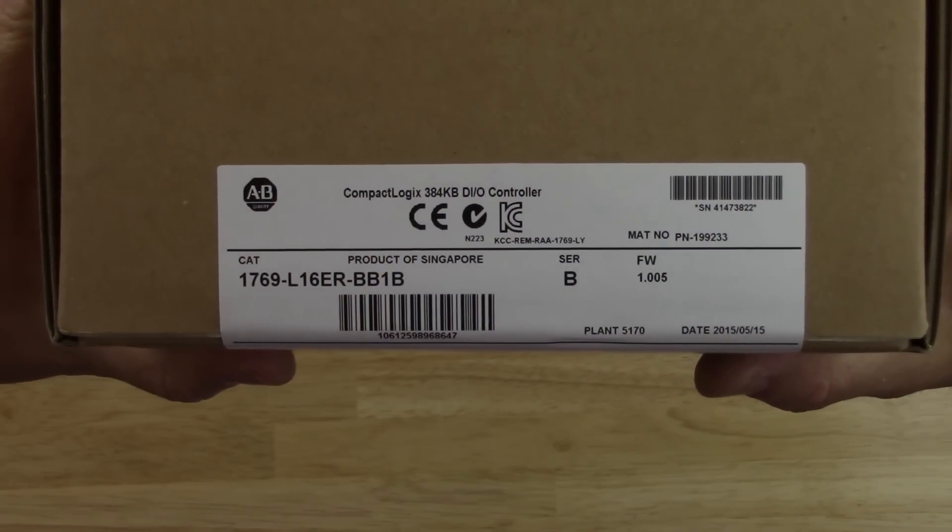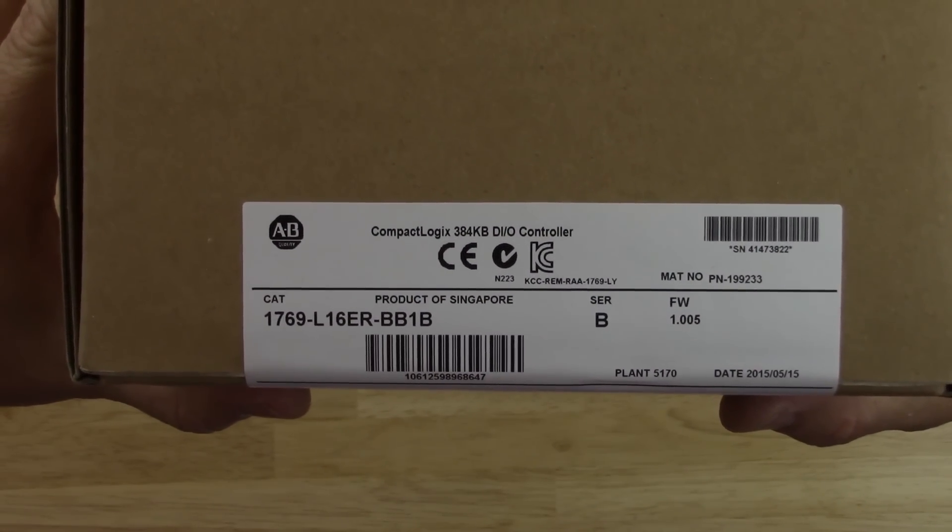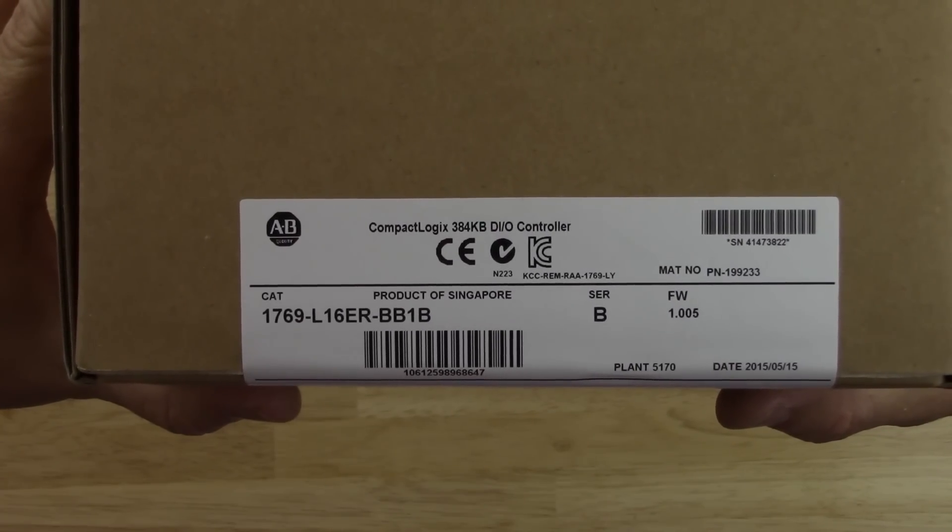Okay, here we have a brand new CompactLogix L1. Let's go ahead and take a look at the label. We'll zoom in on it. And here you can see I have a 1769 L16ER BB-1B.